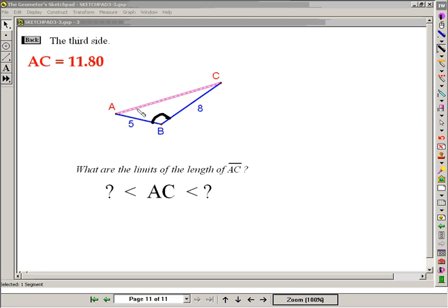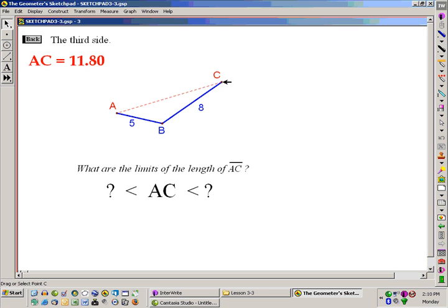So again, the larger this angle becomes, the longer this side becomes. So if this is the largest angle, this will be the longest side. Or, if angle B becomes the smallest angle, then this will be the shortest side. So there's a connection between these two opposite parts.